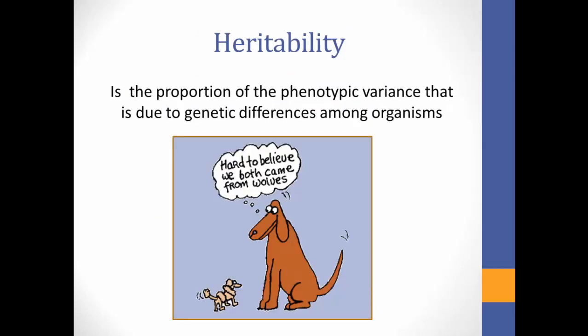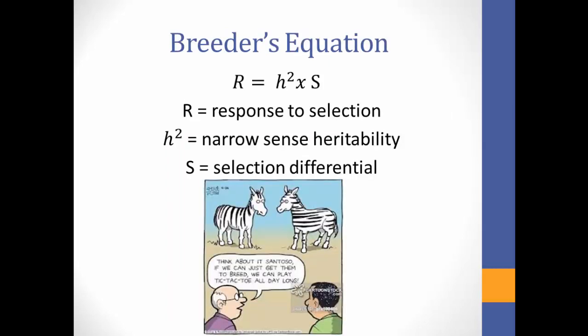Heritability of a trait is the proportion of the phenotypic variance that is due to genetic differences among individuals. You may be wondering how heritability relates to selective breeding, and the answer is the breeder's equation. The breeder's equation tells us how strong the response to selection will be as a result of the additive genetic variance of a trait and how that selection is applied to that variation.